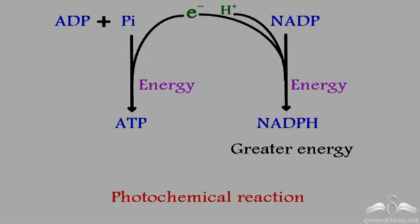ATP and NADPH are formed in the cell using the highly energised electrons and H⁺ ions from the photolysis of water, that is, the breakdown of water in the presence of light. Thus, this reaction is known as the photochemical reaction.